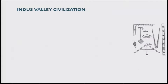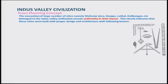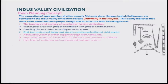The town planning concept is evident from excavations of large numbers of cities — namely Mohenjo-daro, Harappa, Lothal, Kalibangan, etc. — which belong to the Indus Valley Civilization. These cities show uniformity in their layout, indicating planned town planning. This clearly shows cities were built with proper design and architecture, considering topology and ecology of the area, as it was a riverine civilization, with most earlier civilizations located by the side of rivers.